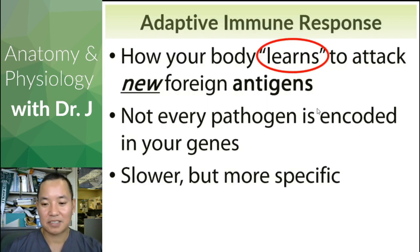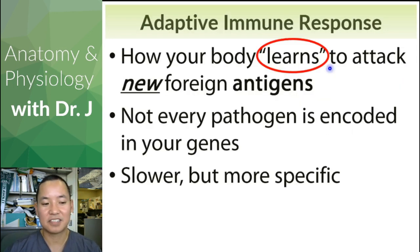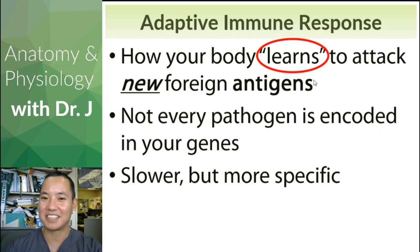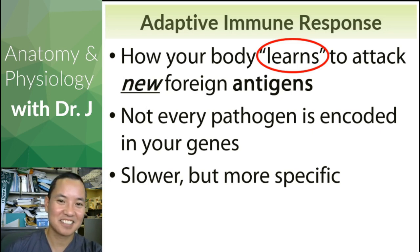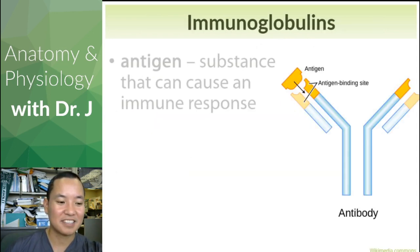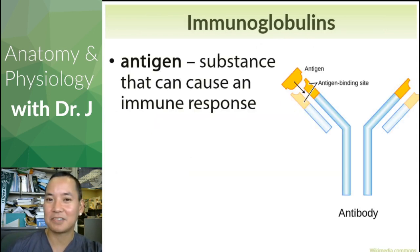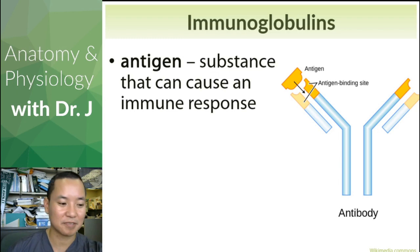This is how your body learns to attack new foreign antigens. Remember antigens — A antigens, B antigens, Rh antigens? We are talking about the same general term. Antigens are any substance or chemical that can cause an immune response, and in this specific context we're talking about the adaptive immune response.